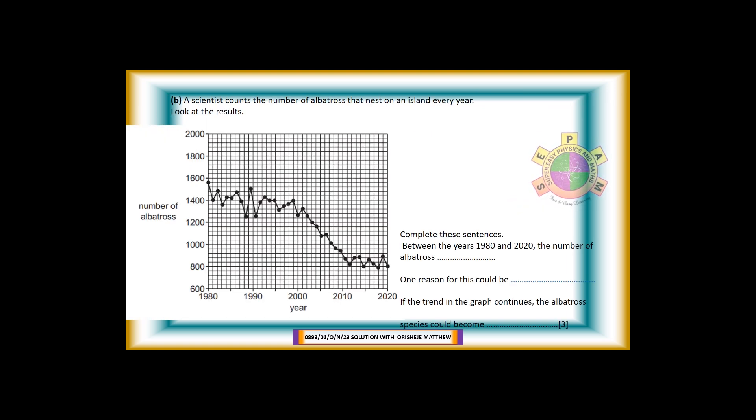10b. A scientist counts the number of albatross that nest on an island every year. Look at the results. Complete these sentences. Between the years 1980 and 2020, the number of albatross decreased from 5200 to 800. One reason for this could be environmental disruption. More reasons for the reduction in the population of albatross includes shortage of food supply, hunting, pollution, death rate is more than birth rate, increased number of predators. If the trend in the graph continues, the albatross species could become extinct. For 3 marks.